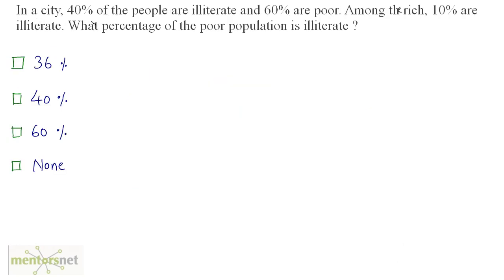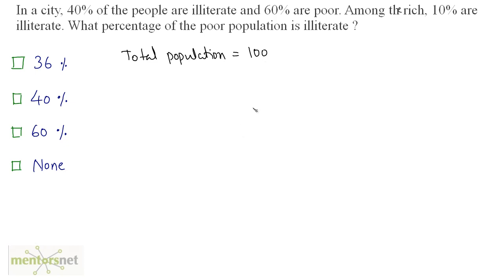In a city, 40% of the people are illiterate and 60% are poor. Among the rich, 10% are illiterate. What percentage of the poor population is illiterate? This is kind of a tricky question. Let us consider the total population of this city is equal to 100 people, just for the sake of simplification.